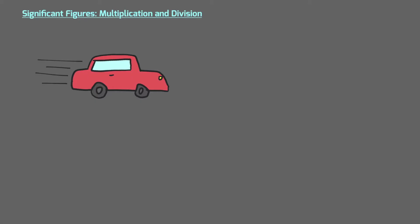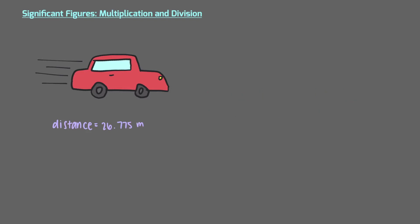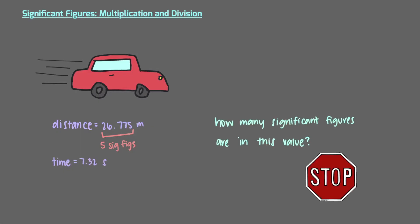We want to find the speed of this car. Because speed is equal to distance over time, we measured out the values of each of these. The car is traveling a total of 26.775 meters — how many significant figures are in this distance? All of these digits are significant, so we have a total of 5 significant figures. We also measured the amount of time it takes the car to go the 26.775 meters: 7.32 seconds.